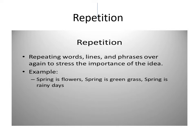Next is repetition. Alliteration means repeating the alphabet, whereas repetition means repeating words, lines, or phrases over and again — to stress and emphasize the importance of an idea. For example: 'Spring is flowers, spring is green grass, spring is rainy days.' The same word 'spring' is repeated in successive lines. When an entire word is repeated in the same line again and again, that is called repetition.